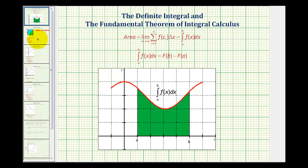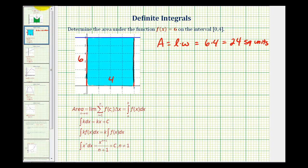So now let's go back to our example. Again, since this function is continuous and non-negative on this interval, the area is going to be equal to the definite integral from zero to four of our function, which is six with respect to x.